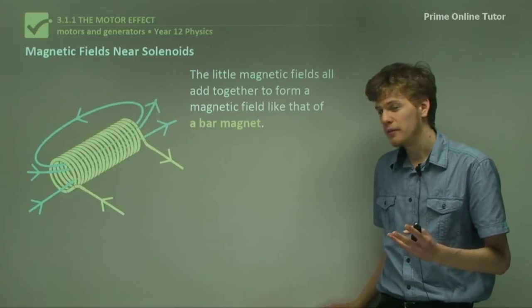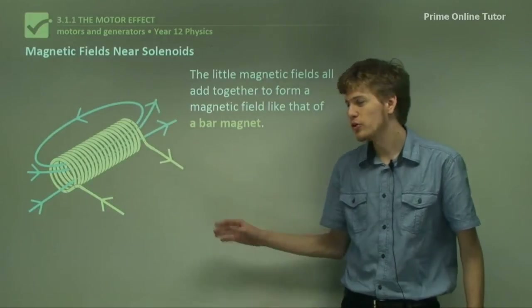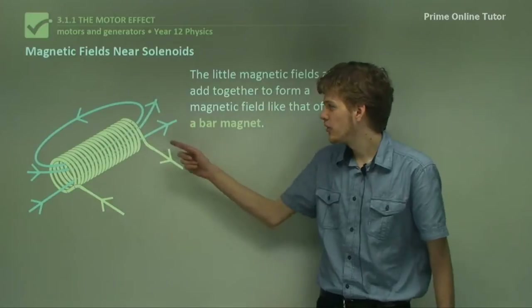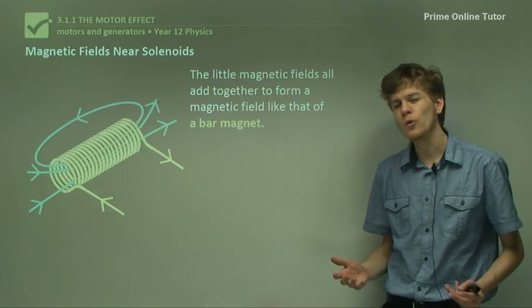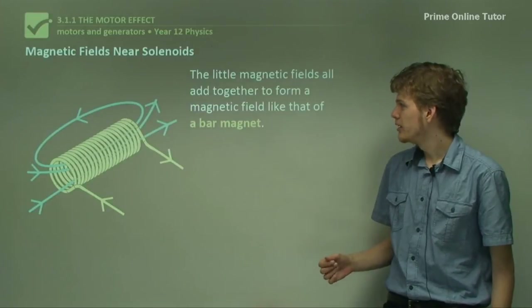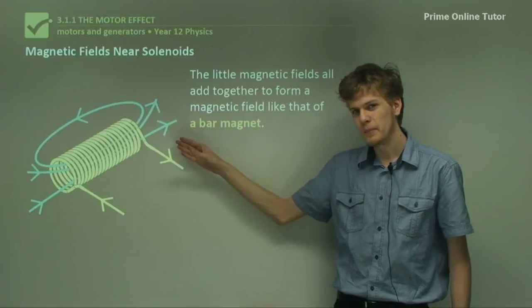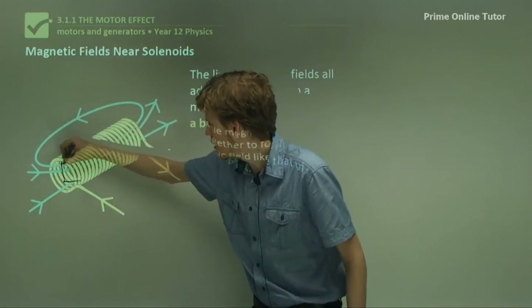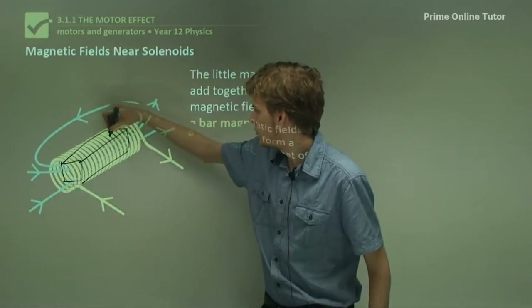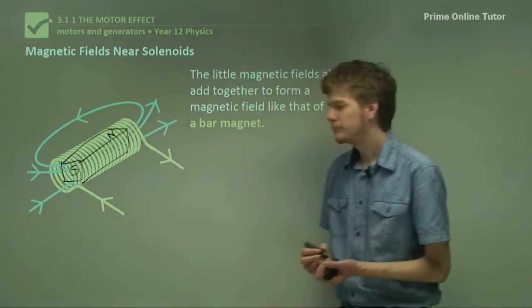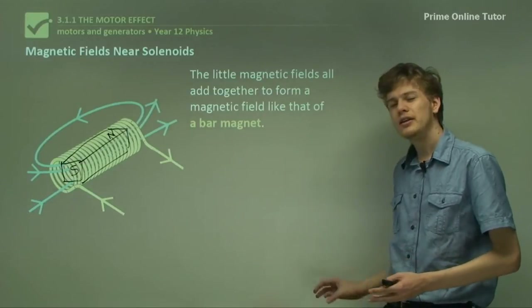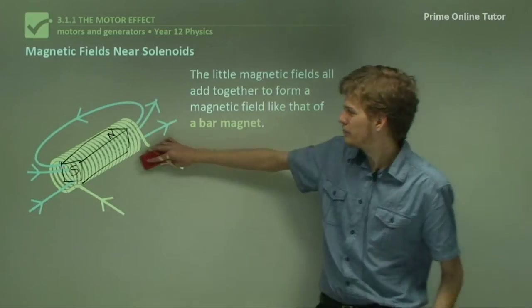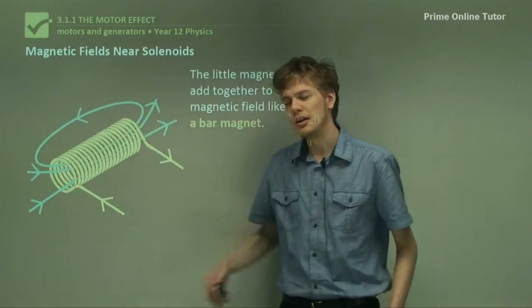When we put all these magnetic fields together, it'll look something like this, where the blue lines represent the magnetic field. We can see that each little loop of wire is contributing to one big magnetic field produced by the entire solenoid. This field might actually look a little bit familiar — it's exactly the same as a field that would be created by a bar magnet, with a north pole at one end and a south pole at the other. So just by getting a long coil of wire with a large enough current through it, we can create our own fairly weak bar magnet. There is in fact a way that we can make it stronger.